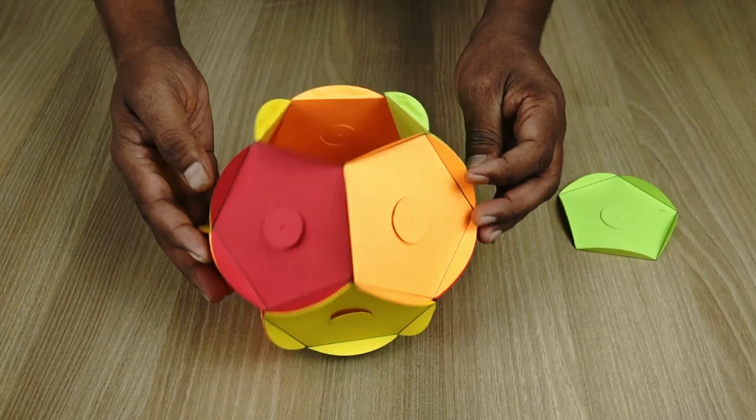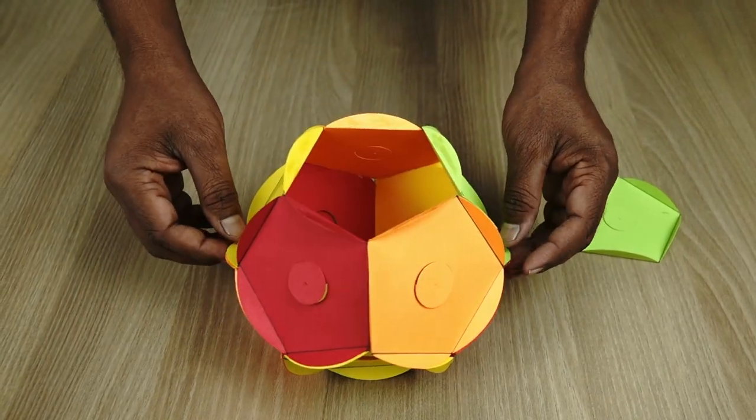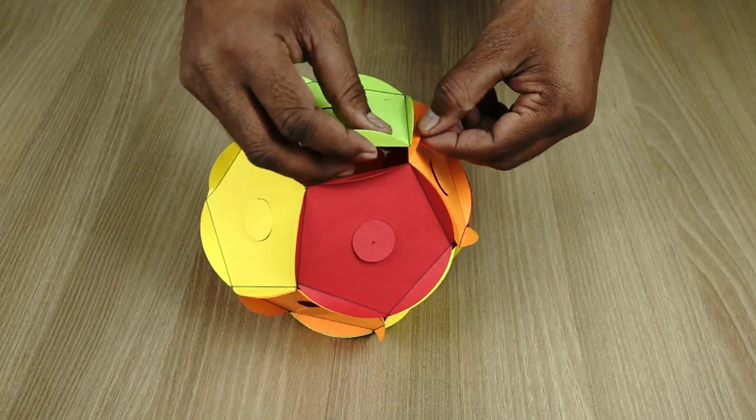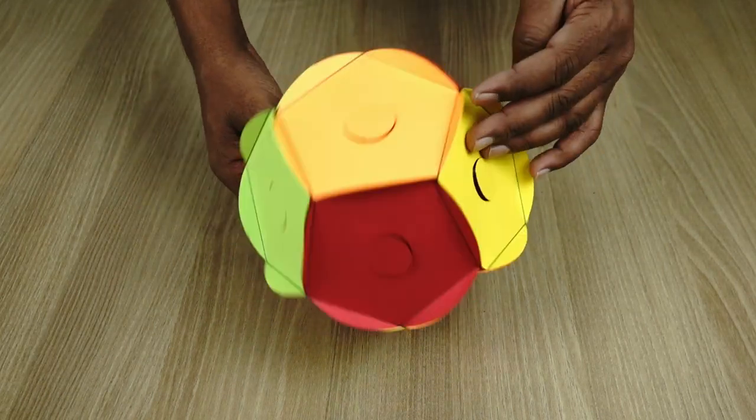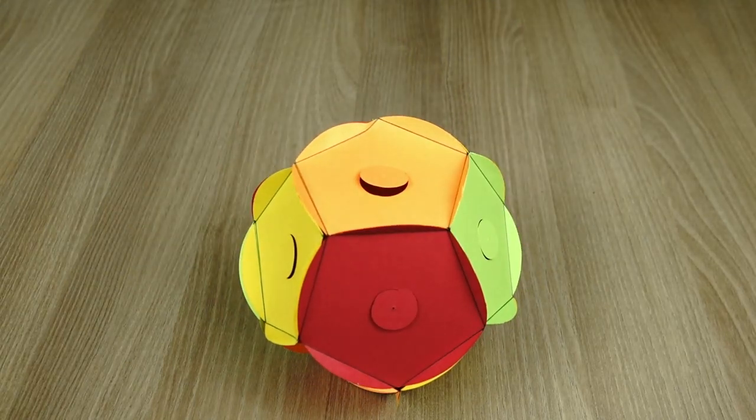This ball becomes quite sturdy and you can even play with it. If you make the ball or the dodecahedron with a really thick sheet of paper you can even play with it and toss the ball around.